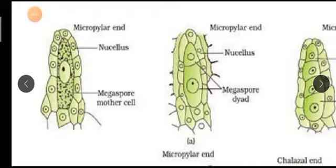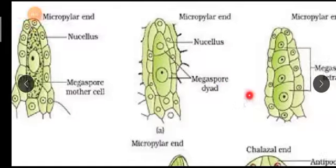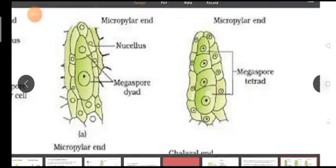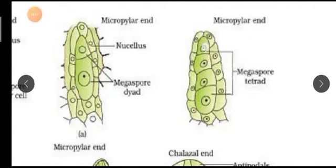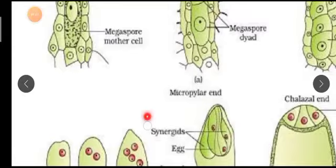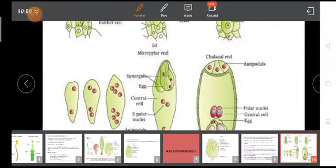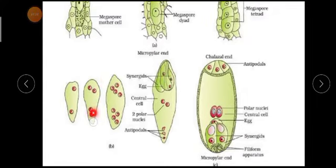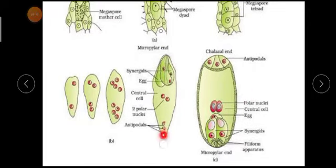Looking at this diagram: this is the micropylar end, this is the chalazal end, and this is the megaspore mother cell. It divides first into two — called the megaspore dyad — then into four, the megaspore tetrad, through meiotic cell division. Two cells move upward and two move downward, making four cells total. Two will hide under the egg apparatus as polar nuclei, three form the antipodal cells, and three sit at the micropylar end as the egg apparatus.